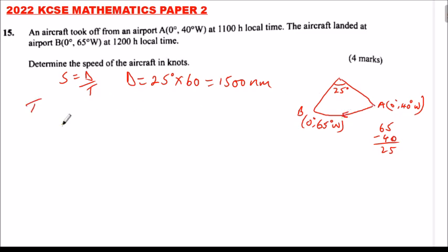Now we need to get time. The time difference, for every degree, the time difference is 4 minutes. Time difference between A and B is equal to 25 multiply by 4. Every degree we have a time difference of 4 minutes. This will give you 100 minutes, which is the same as 1 hour 40 minutes.